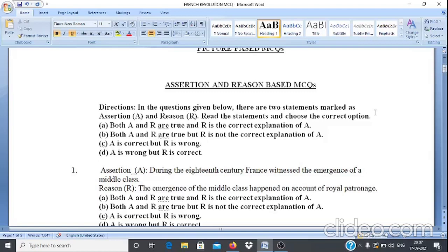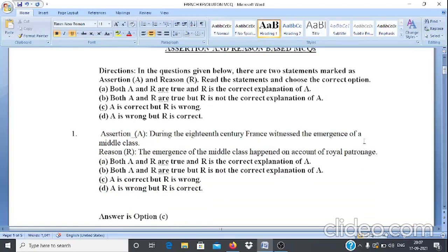And if assertion is wrong but reason is correct, then students are supposed to mark B. Now we will discuss some examples of assertion and reason-based MCQs.